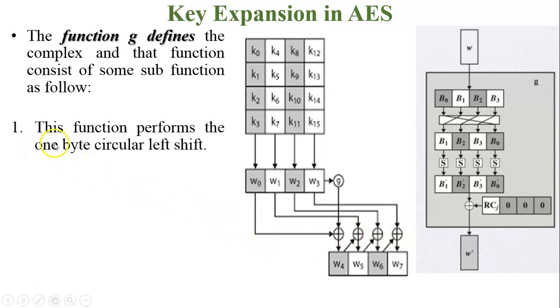First, this function performs a one byte circular left shift. See in this figure b0, b1, b2, b3. All these bytes perform a circular left shift. So b1 moves over here, b2, b3, and b0 comes at the last position.